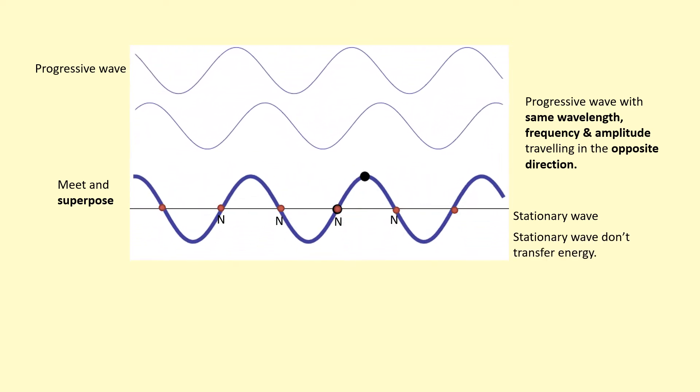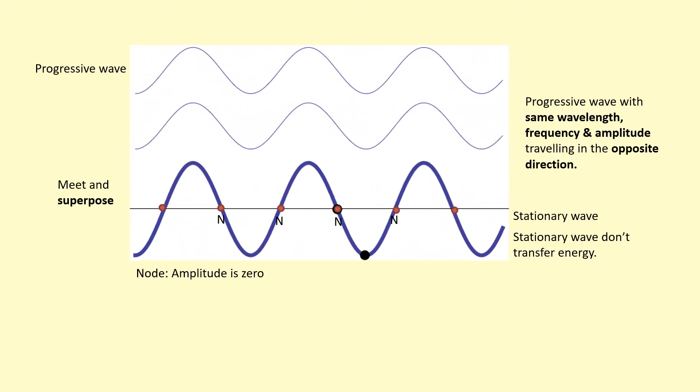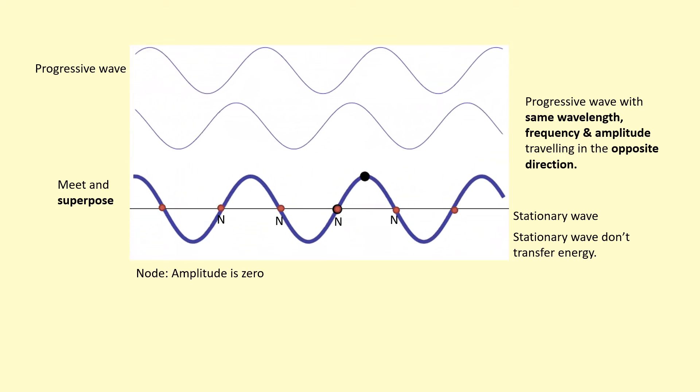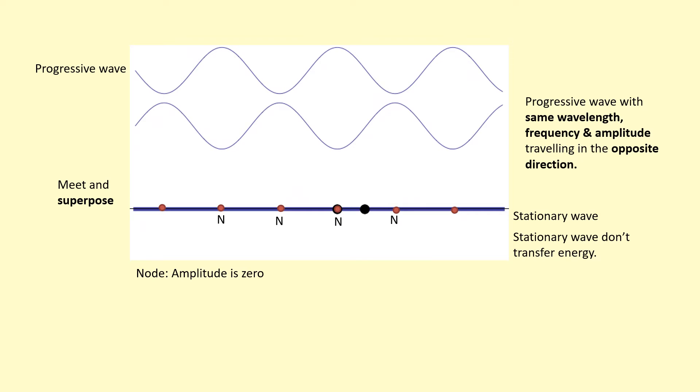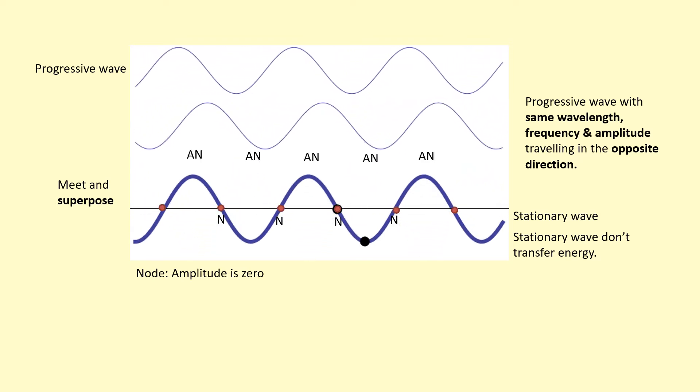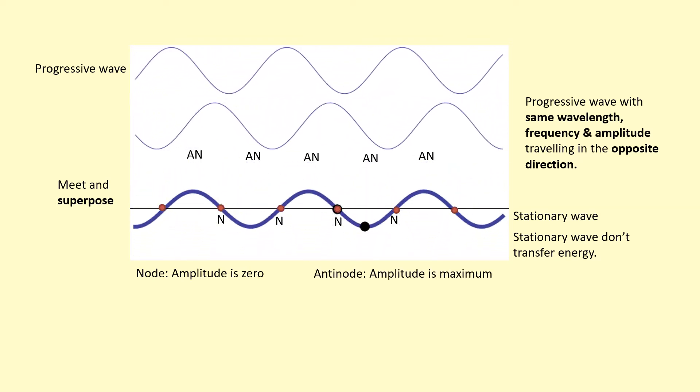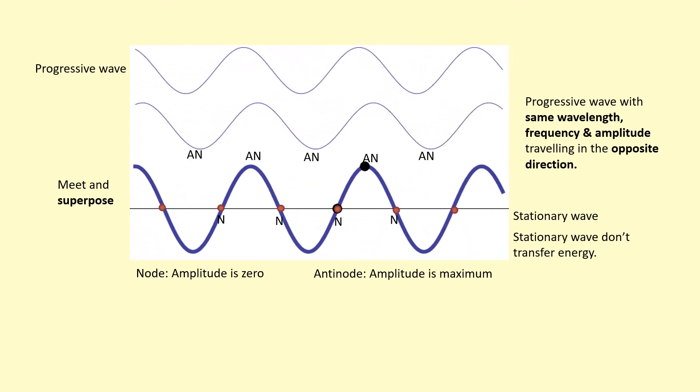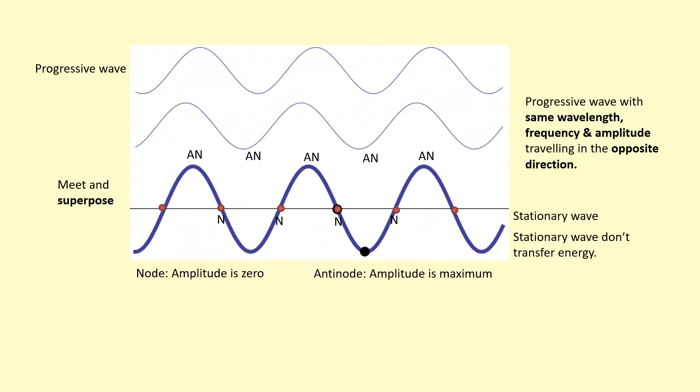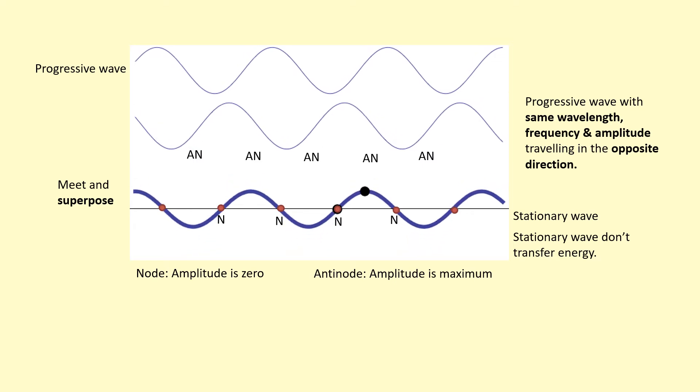It's got these features called nodes, where nodes are points of zero amplitude. The particles aren't moving up or down or left or right. They're not oscillating at all. And then it's got these antinodes where the particles are oscillating with a maximum amplitude. And then we've got other particles in between which is between zero and maximum amplitude.